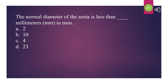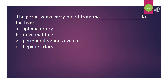The normal diameter of the aorta is less than how many millimeters in men? Options: 2, 10, 4, or 23. The answer is D: 23 millimeters. The portal veins carry blood from what to the liver? A. Splenic artery. B. Intestinal tract. C. Peripheral venous system. D. Hepatic artery. The answer is B: Intestinal tract.